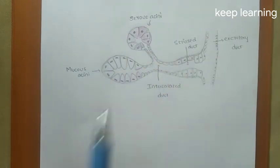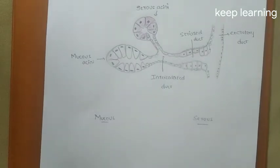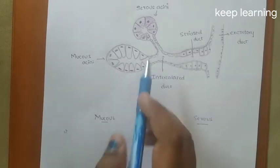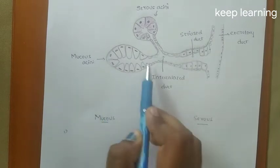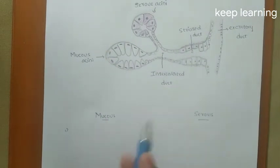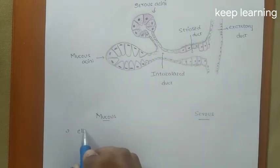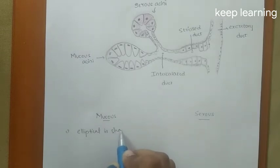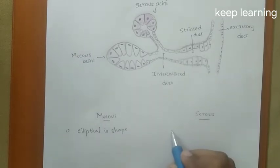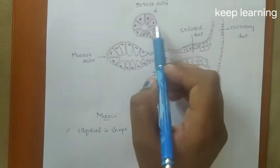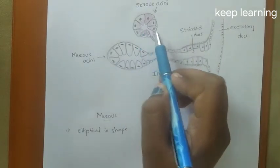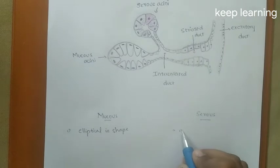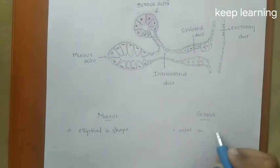The first difference: the mucous acini are elliptical in shape, whereas the serous acini are round or spherical in shape. Looking at the picture, this is the serous acinus and it is spherical in shape.